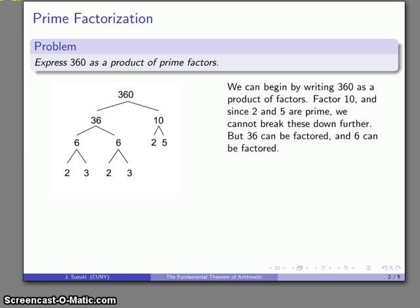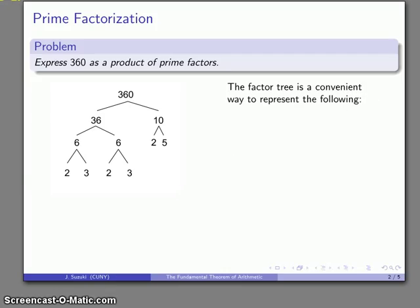Now this structure that we have here is sometimes called a factor tree and it's a convenient way of representing a sequence of equations. So in particular it's good to represent the following sequence of equations. Our first step here 360 I've split into 36 and 10. That's 360 is 36 times 10.